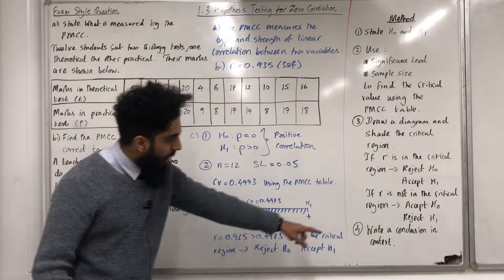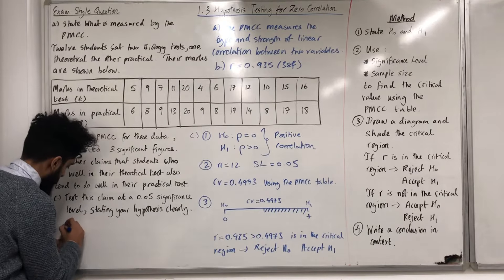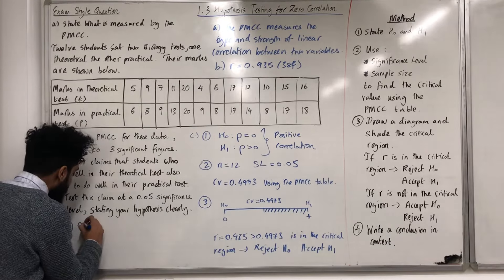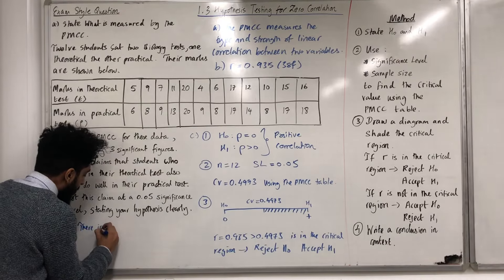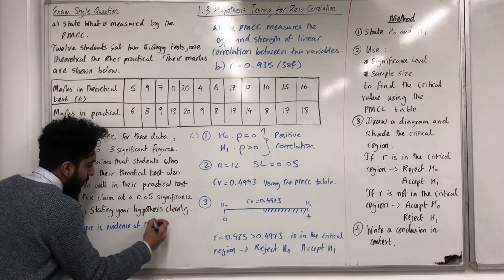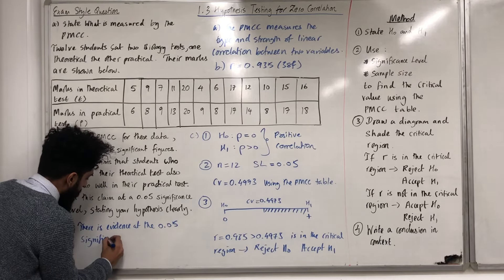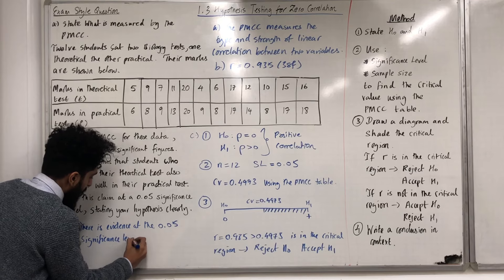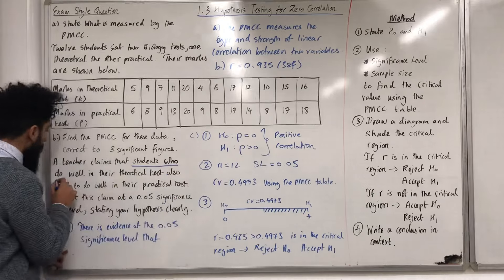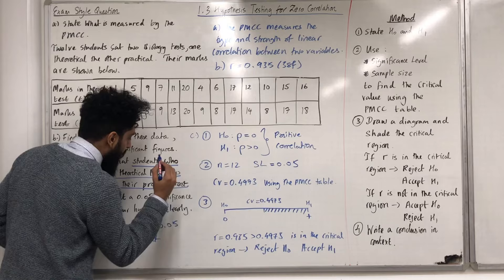Step 4: write a conclusion in context. Because we are accepting H1, we conclude that there is evidence at the 0.05 significance level that students who do well in their theoretical test also tend to do well in their practical test.